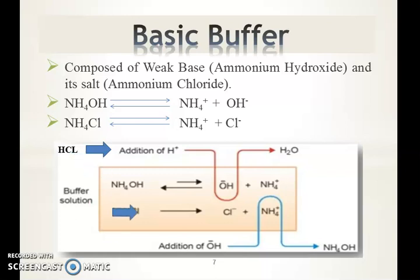If we add a strong alkali like sodium hydroxide in small concentration, it dissociates into the sodium ion and hydroxide ion. The hydroxide ion combines with the ammonium ion and forms ammonium hydroxide, which is already present in our system — resulting in no change in pH. However, if we add acids or bases above the buffer capacity limit, then a change in pH does occur.